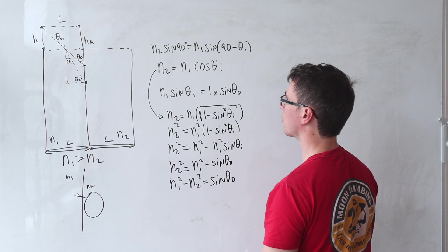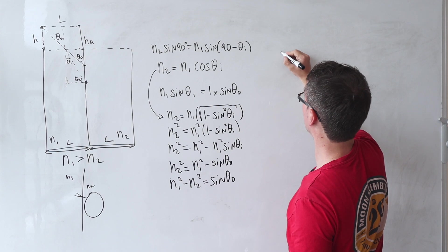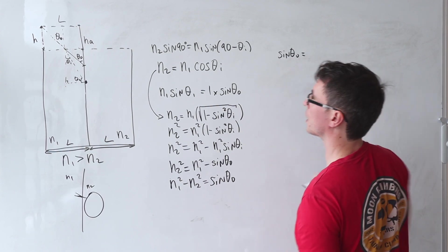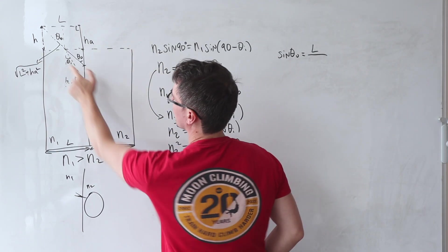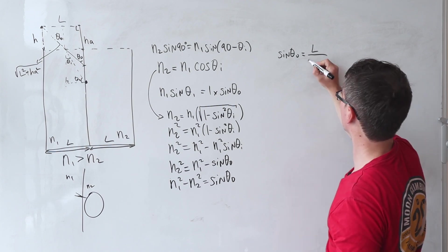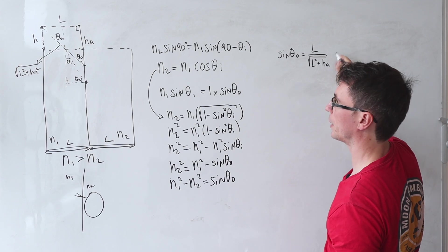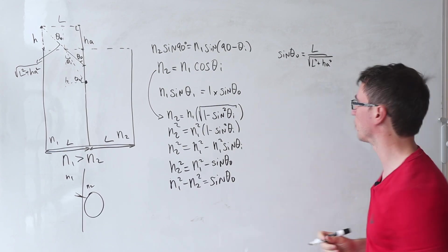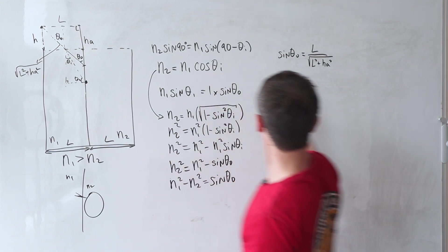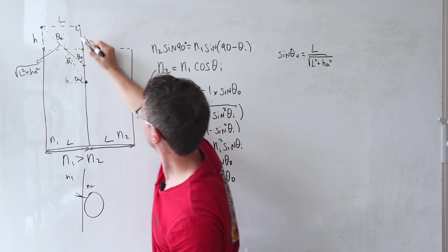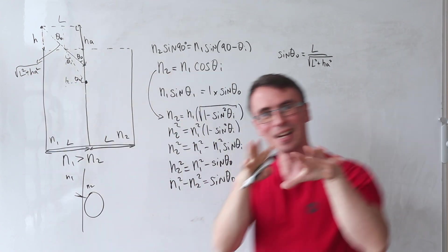So we know that this distance here is going to be L. Now let's just use some basic trigonometry. We can say that sine theta naught is going to be the opposite, which is L. Sine is going to be the opposite divided by the hypotenuse, which is just going to be the square root of L squared plus HA squared. We're definitely getting somewhere. This here is the apparent height. And once I figure out an expression for this, all I need to do is subtract this distance. We're going to get this distance, then take away this one to get our answer.